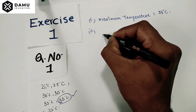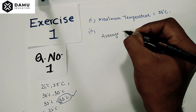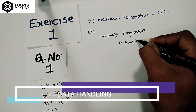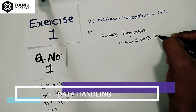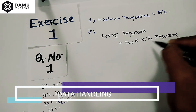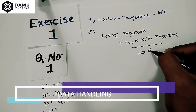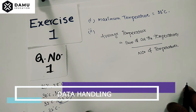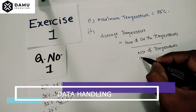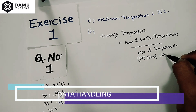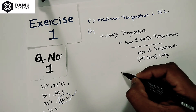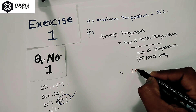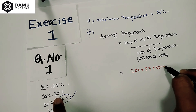The next question asks: what is the average temperature of the week? The average temperature is always equal to the sum of all the temperatures divided by the number of temperatures — or number of days in the week.